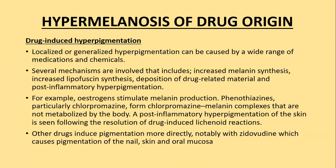Drug-induced hyperpigmentation can be localized or generalized and can be caused by a wide range of medications and chemicals. The mechanisms involved include increased melanin synthesis, increased lipofuscin synthesis, deposition of drug-related material into the skin, and post-inflammatory hyperpigmentation. Examples include estrogen stimulating melanin production, and phenothiazines — particularly chlorpromazine — forming chlorpromazine-melanin complexes which are not metabolized in the body.